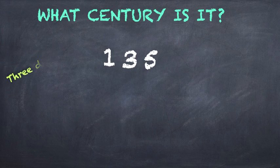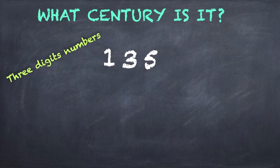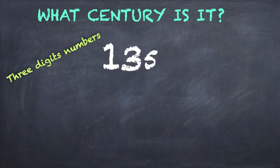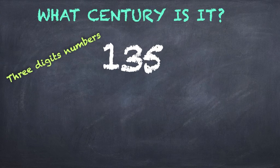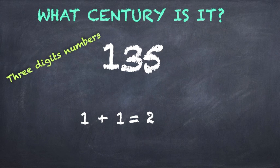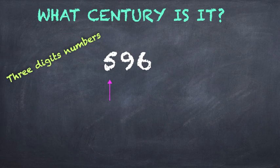So let's see the year 135, a three-digit number. We see the hundreds, the tens, the ones, and we have to point the first one, the hundreds. And we add one. One plus one equals two. So the year 135 is the second century.